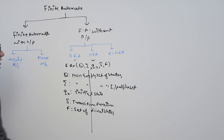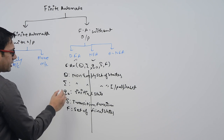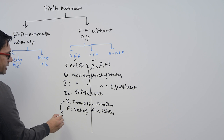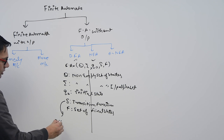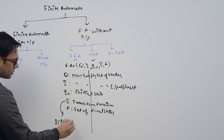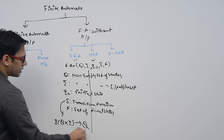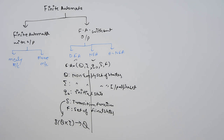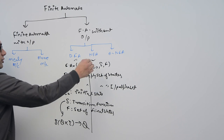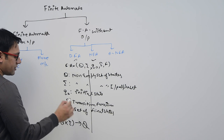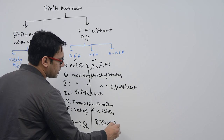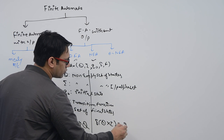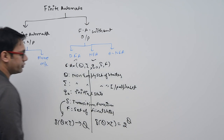When we discuss about DFA, the transition function δ is defined as Q cross Σ takes us to Q states — meaning one single unique state. When we discuss about NFA, the transition function δ is defined as Q cross Σ takes us to 2 raised to the power Q states.